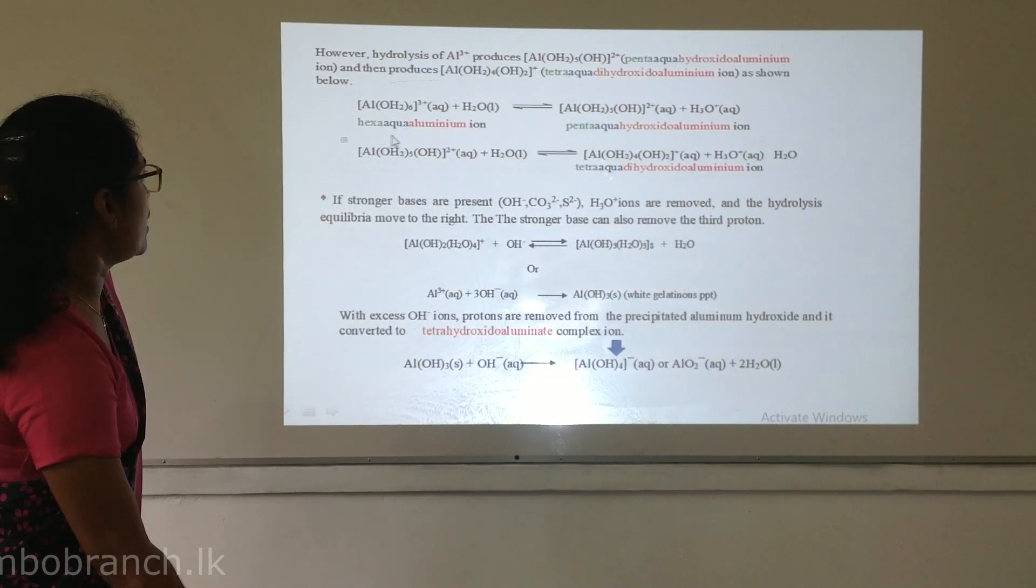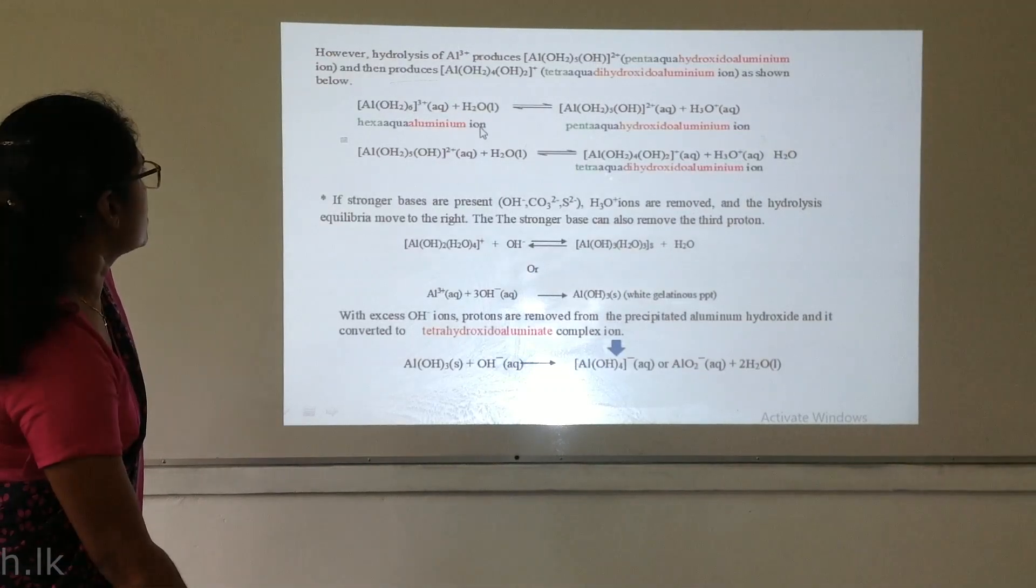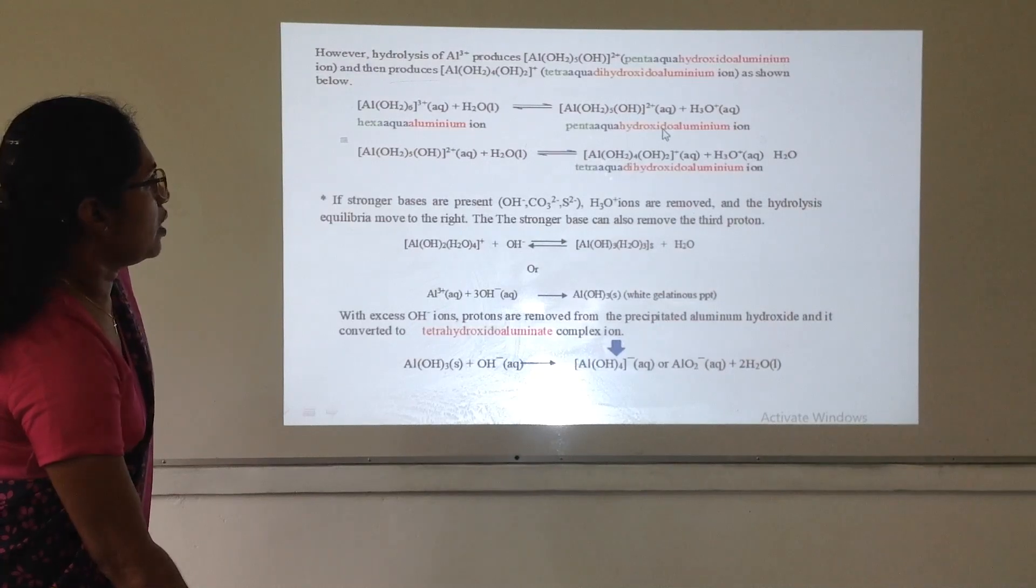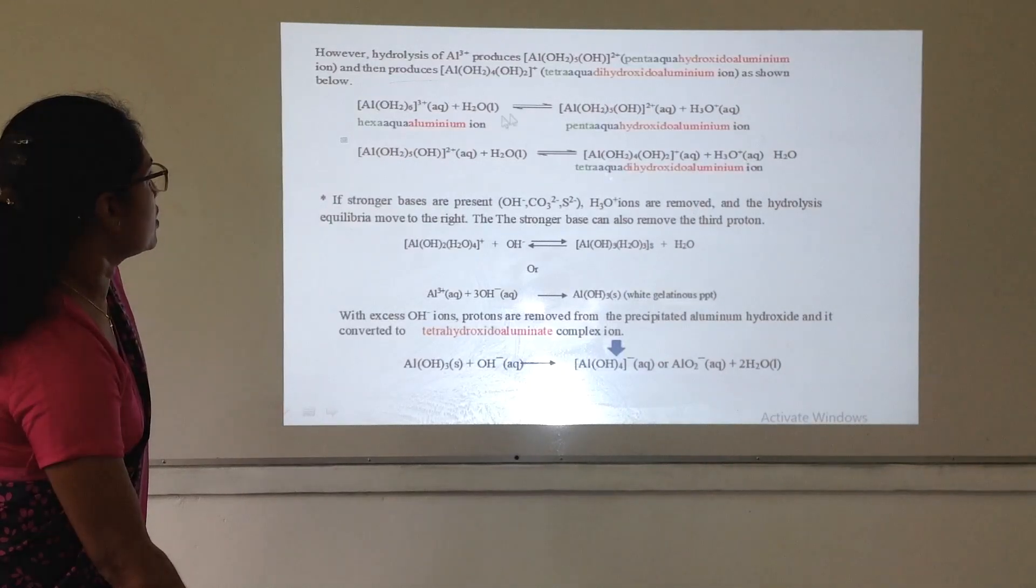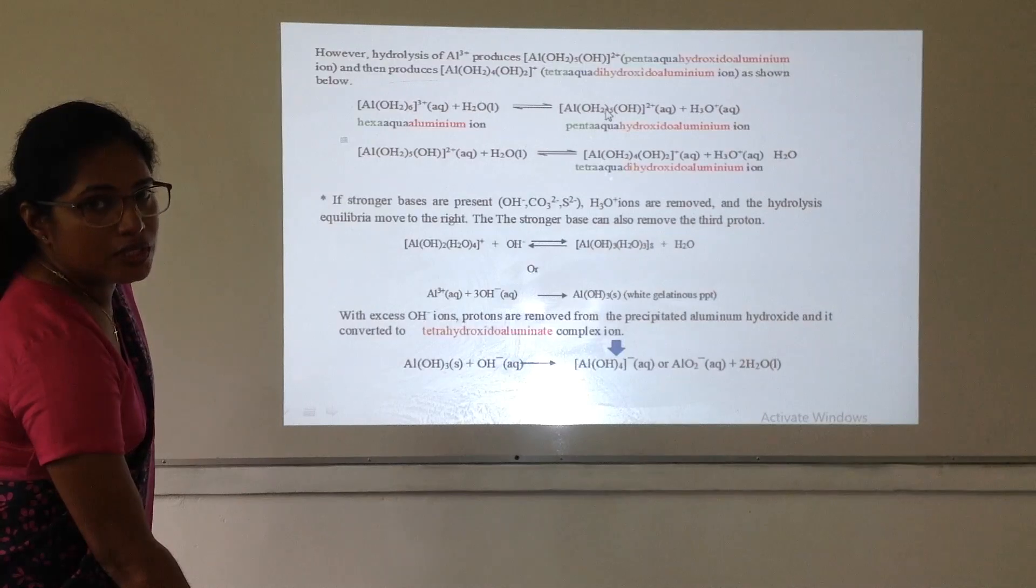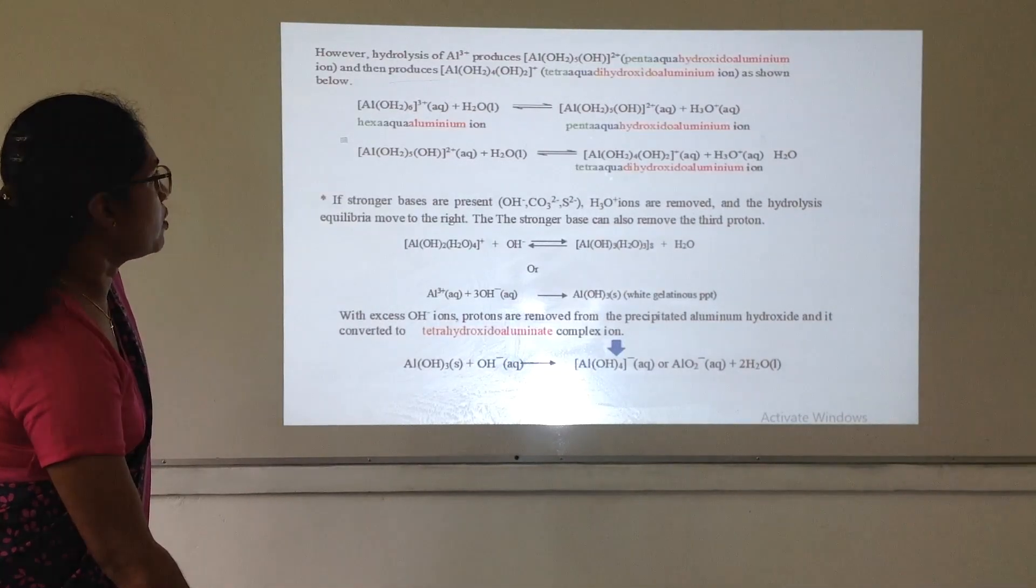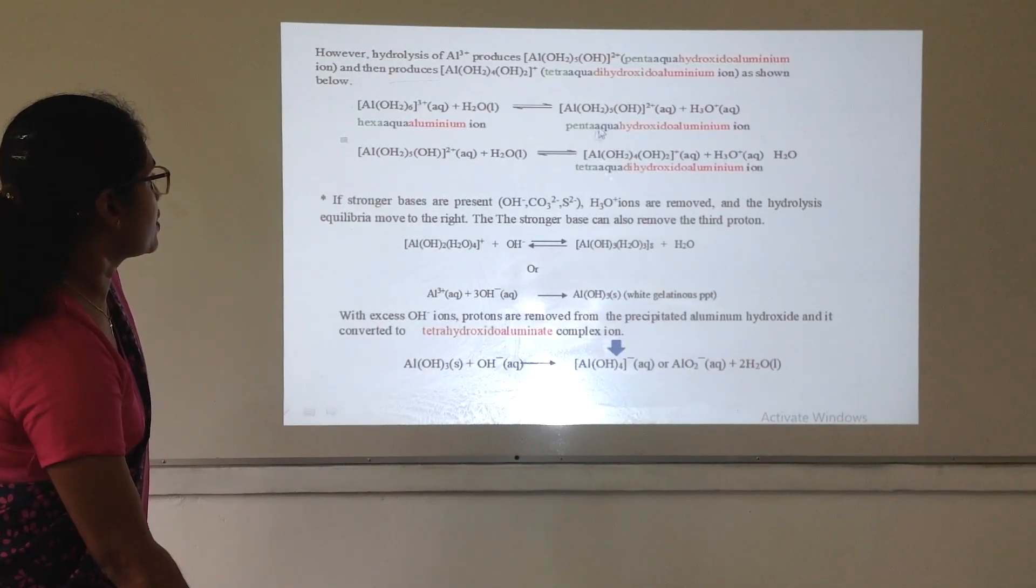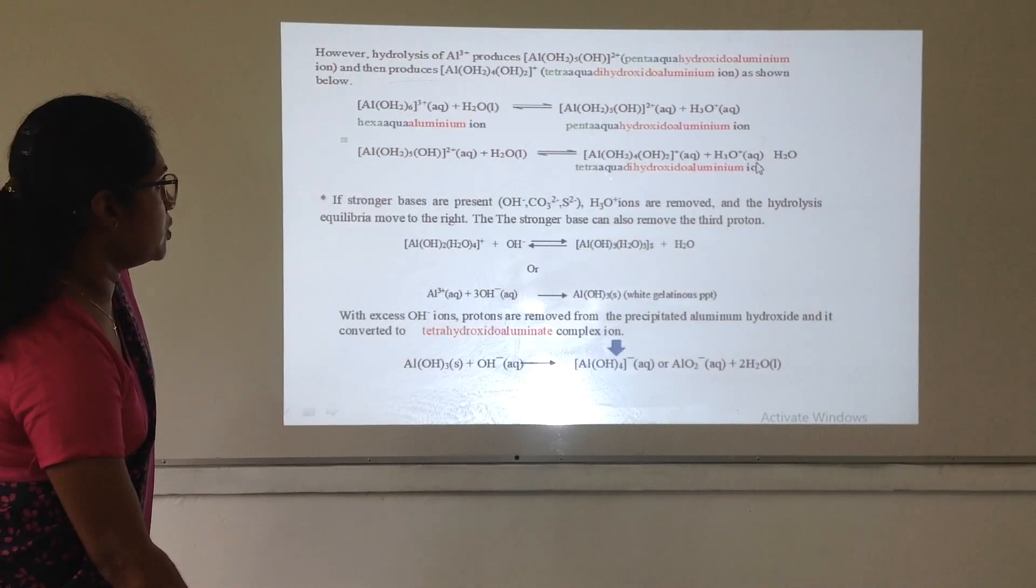So, this is the hexa-aqua-aluminium ion and in aqueous solution that ion hydrolyzes and forms the penta-aqua-hydroxyl aluminium ion. Here, 6 water molecules and here, 5 water molecules because a proton is removed and that water molecule turns to a hydroxyl ion.